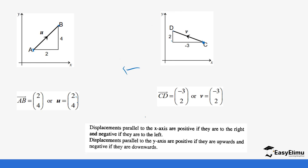Here is the rule for displacement of a vector: displacements parallel to the x-axis are positive if they move to the right and negative if they move to the left — it doesn't matter which side of the x-axis you're on, if the movement is towards the negative side it is negative. Displacements parallel to the y-axis are positive if they move upwards, towards the positive side, and negative if they move downwards, towards the negative side.